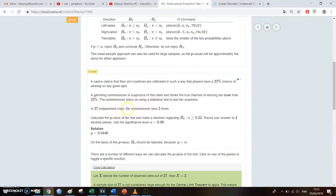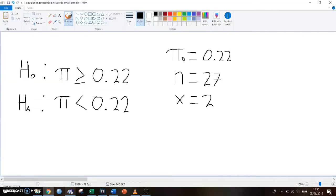So this is the n. The commissioner wins two times, that's the x. And the population proportion is 0.22 because 22% is the same as a 0.22 chance. Well, we're gonna be working in Paint again.